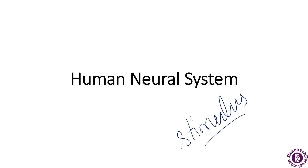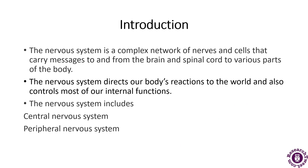The nervous system, or neural system, is a complex network of neurons specialized to carry messages. It is a complex network of nerves and cells that carry messages to and from the brain and spinal cord to the various parts of the body. The complexity of the nervous system increases as we move towards higher animals. The nervous system directs the body's reaction to the world and also controls most of our internal functions.